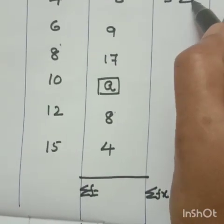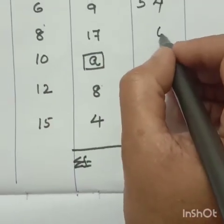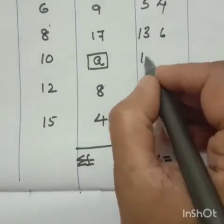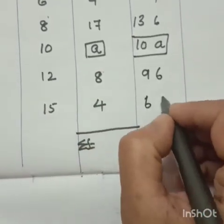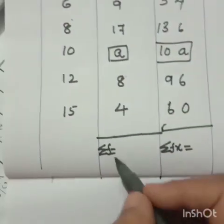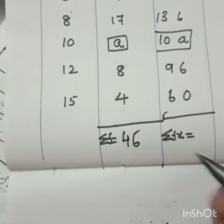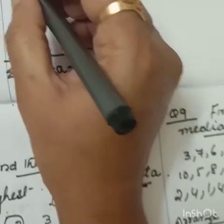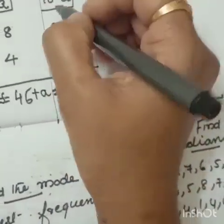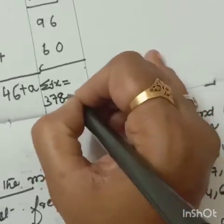8 times 4 are 32. 4 times 9, 6 are 54. 17 into 8, 136. 10 into 8, 10 times 9. You can't do nothing because this is the variable number. 12 into 8, 96. Now you have to add. Because sigma f you want. You can't add a. 46. Here what you will get, 46 plus a. Sigma fx, what you will get. Not add 10 a. Rest of the number you add it. You will get 378 plus 10 a.